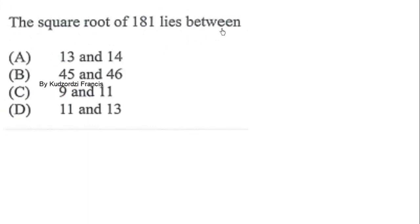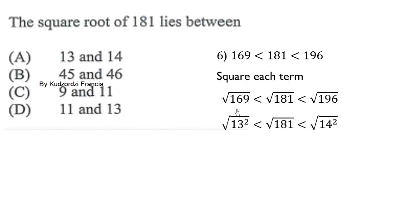The square root of 181 lies between which two numbers? We know 181 is greater than 169 and less than 196. Square root each: √169 < √181 < √196. Since √169 equals 13 and √196 equals 14, we get 13 < √181 < 14. Therefore it's between 13 and 14.